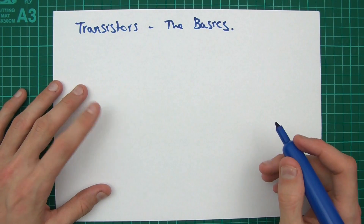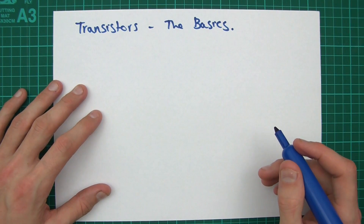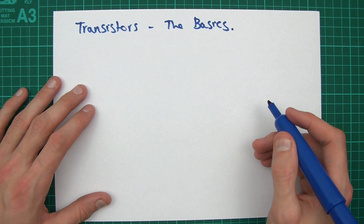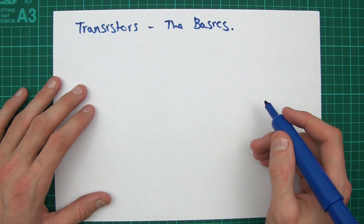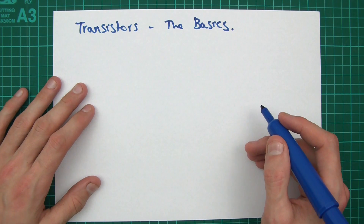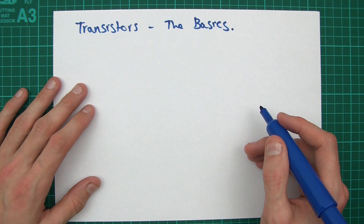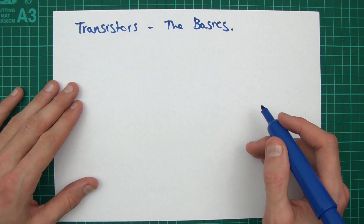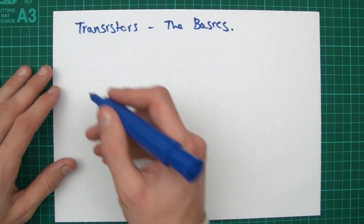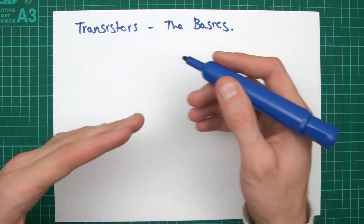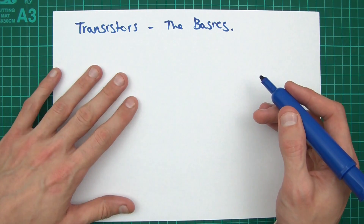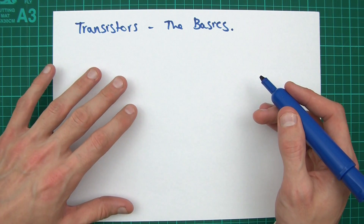Hi everyone. In this video I wanted to talk about transistors. So what is a transistor? It's an electronic component and an extremely important one because it builds the foundation of electronics. It can do two things: transistors are used as switches and they're used as amplifiers. I'm not going to talk about amplifiers — I'm going to talk about switching.